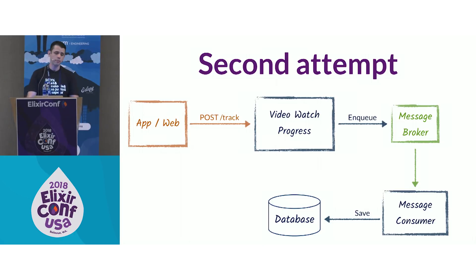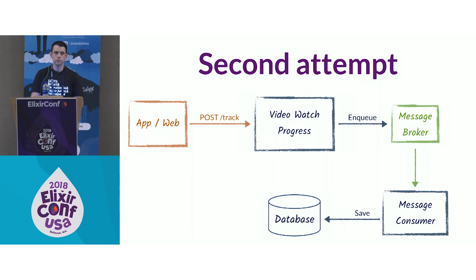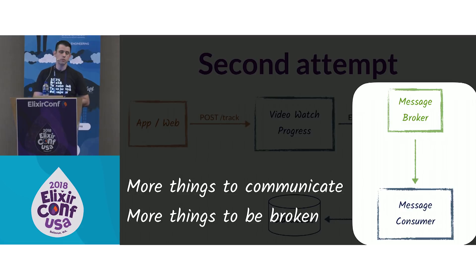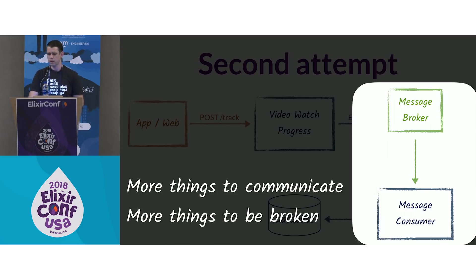The second attempt was to split the load by putting events into a message broker like RabbitMQ, Redis, or Kafka, then having a consumer write to the database and control back pressure. The problem with this is you need a lot of external components — more things to communicate, more things that can break. You have to scale RabbitMQ or Redis, and sometimes you don't need persistence, which was our case.